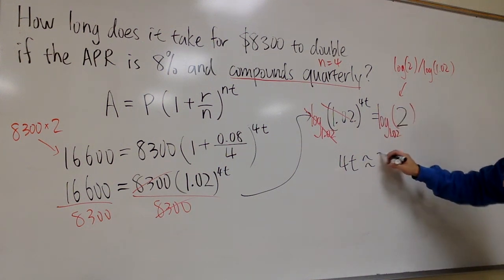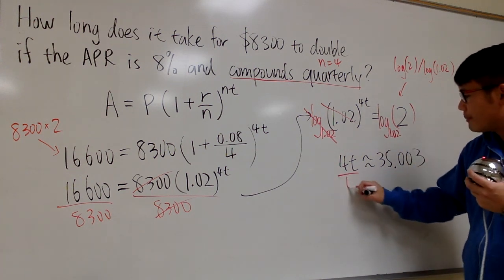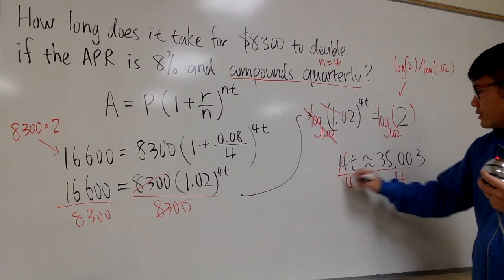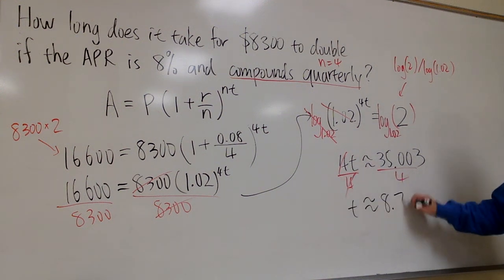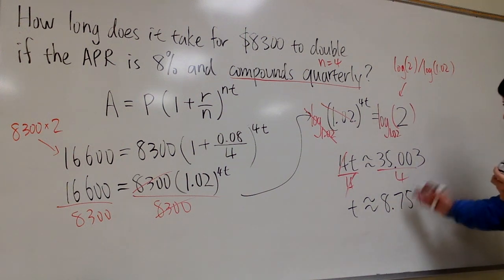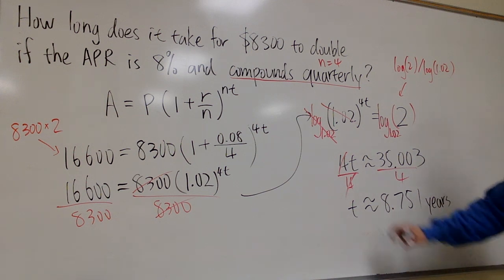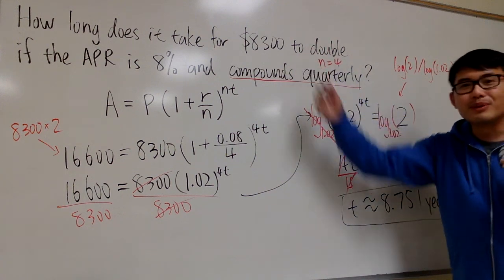And once you do that, you will get about 35.003. And let me just divide both sides by 4. Cancel, cancel. And t is approximately 8.751. And we are done. So it's about 8.751 years. Not so bad, right? Because after this many years, the amount will be doubled.